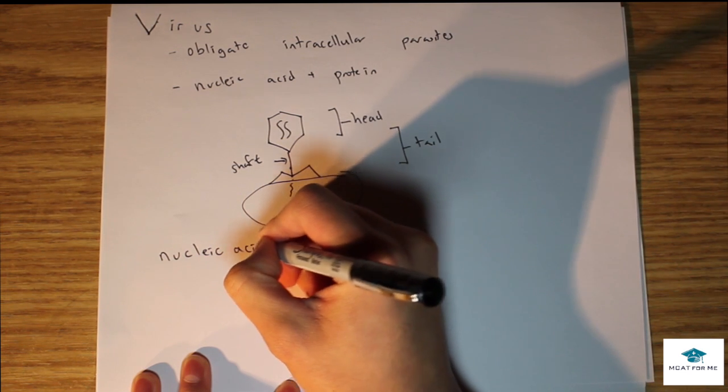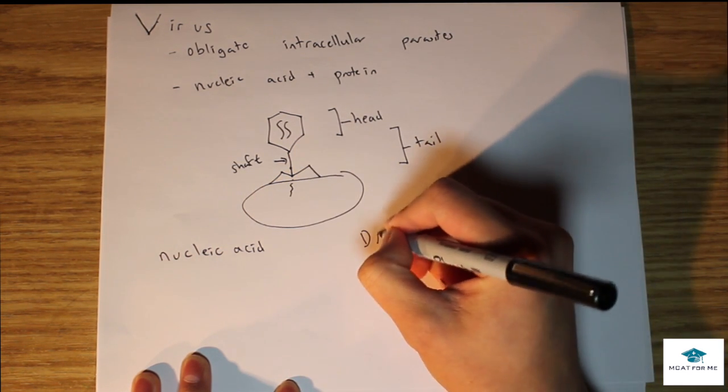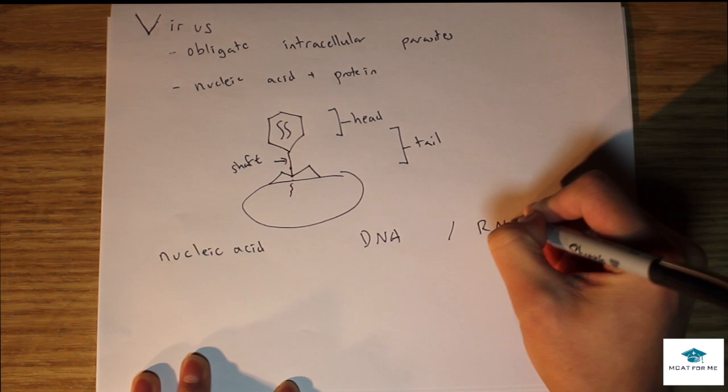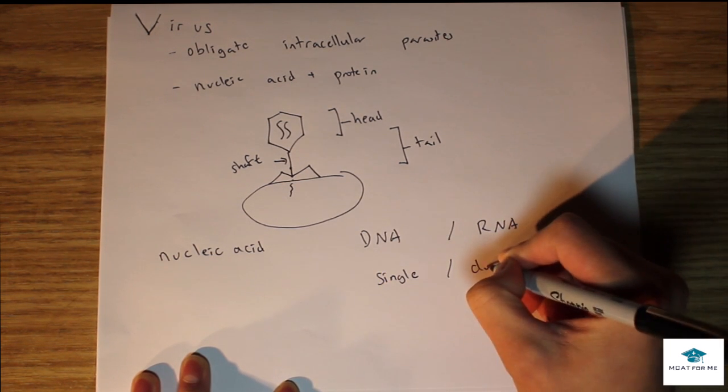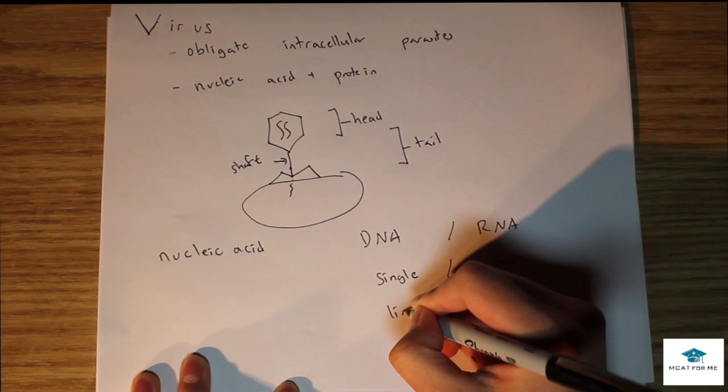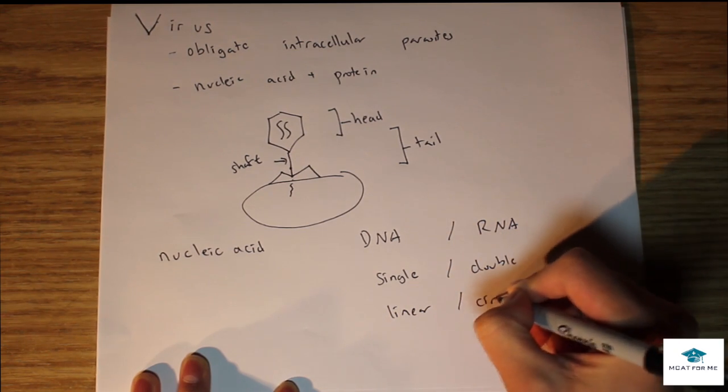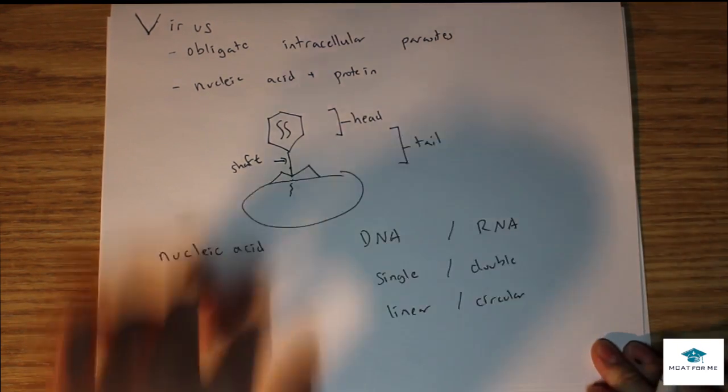It's made out of nucleic acids and this can be DNA and it could be RNA. It can be single stranded or it can be double stranded and also can be linear or circular. So that's how we would define viruses.